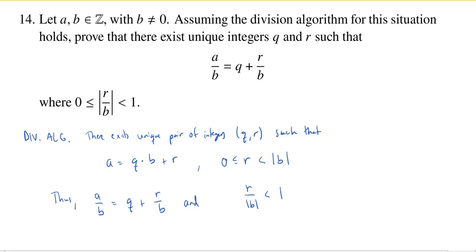And of course, if you take zero and divide it by the absolute value of B, that will still be zero. So if we have that zero is less than or equal to R is less than the absolute value of B, dividing everything, we divide by the absolute value of B will give us this inequality here.